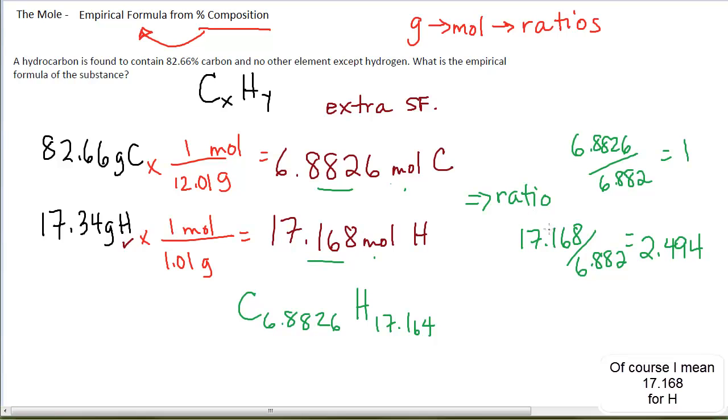So to get the ratios, essentially, you're just employing a math trick to get the smallest whole number ratios here.